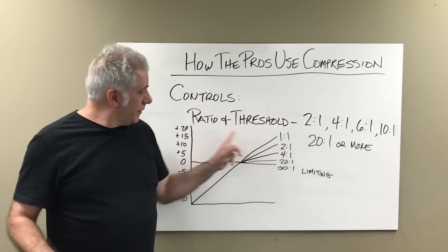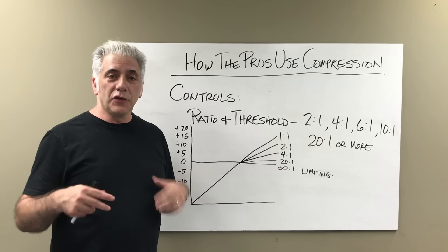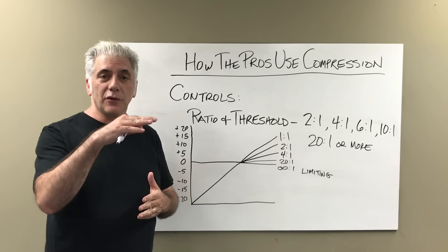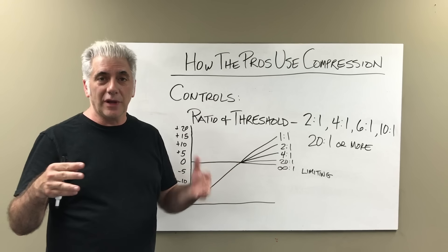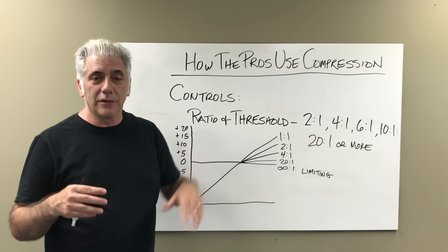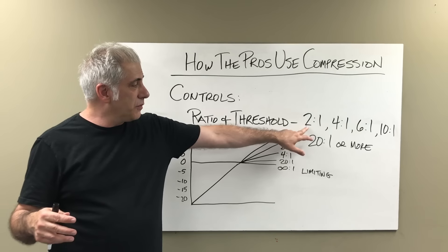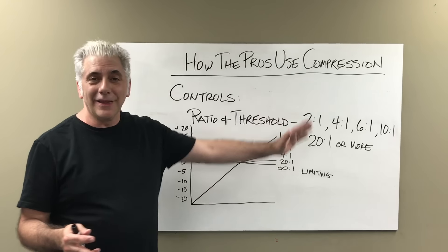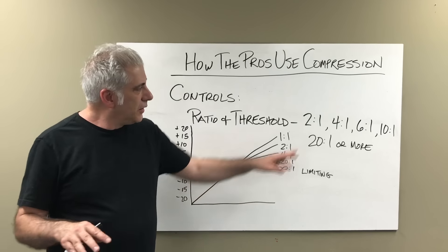Ratio and threshold of the compressor determine when the compressor actually kicks in and is working. Once a signal passes a certain threshold, the compressor kicks in and starts to reduce the amplitude. A 2:1 compression ratio is usually where you begin engaging compression. 1:1 is no compression at all — that's just the sound directly through. Then you have 2:1, 4:1, 6:1, 10:1, and 20:1. Over 20:1 is basically limiting.